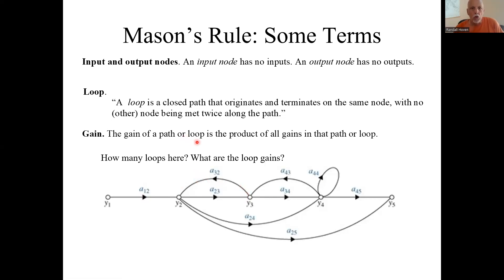But for a loop, say this loop here from Y2 to Y3 and then back to Y2, that loop gain is the product of all the gains in that loop. So this one would be A23 times A32.